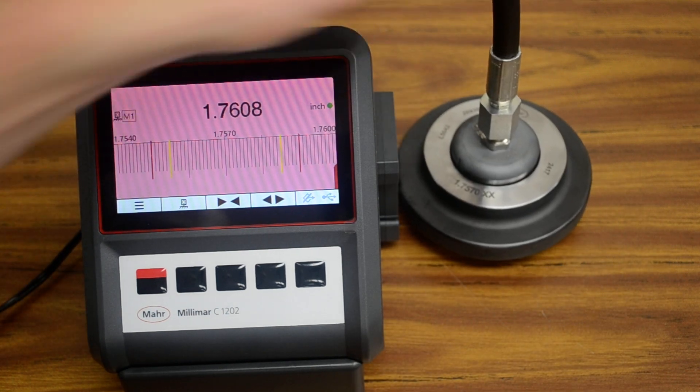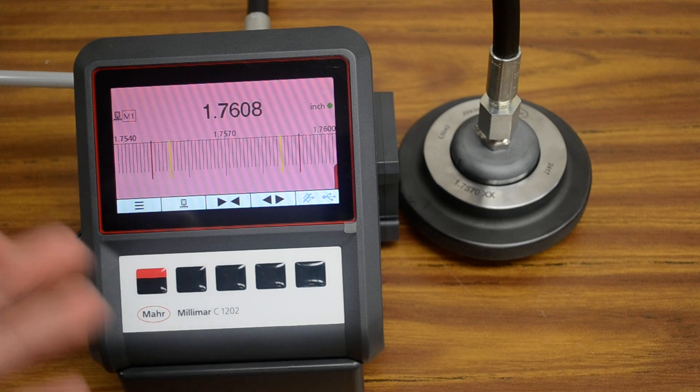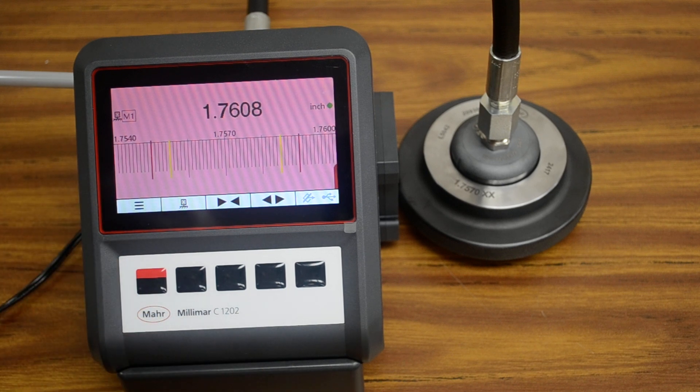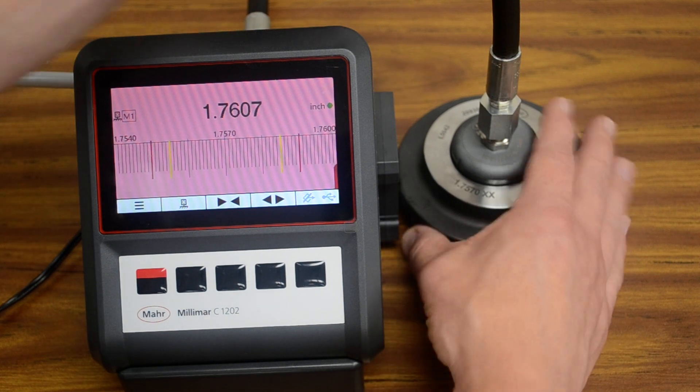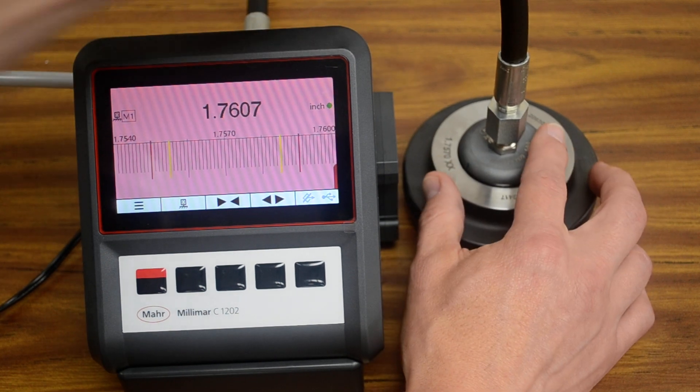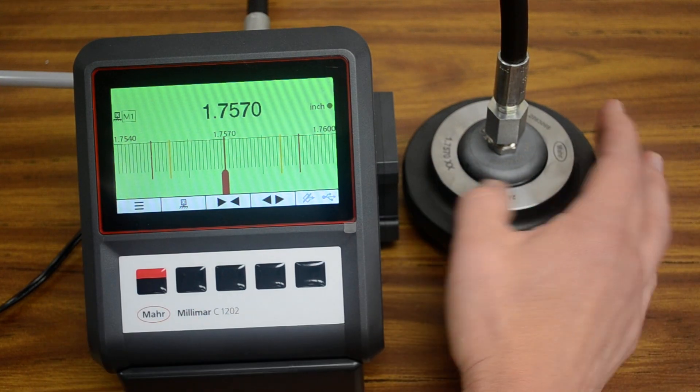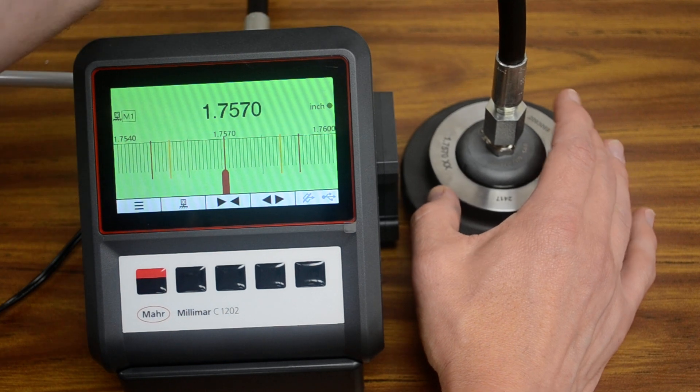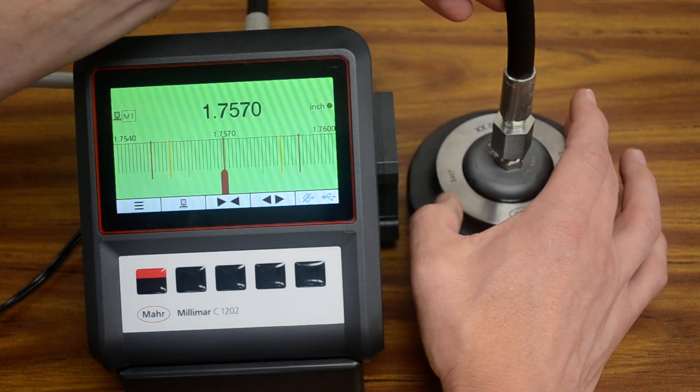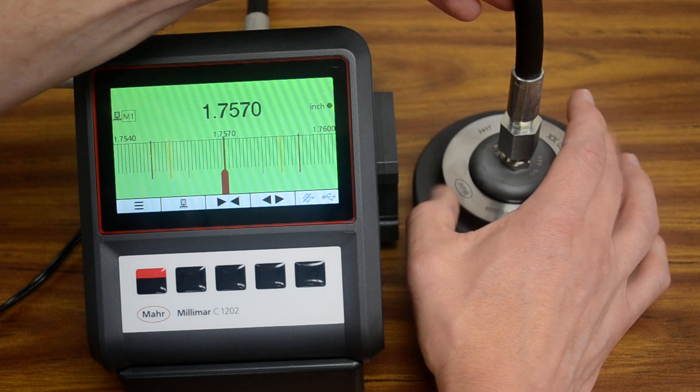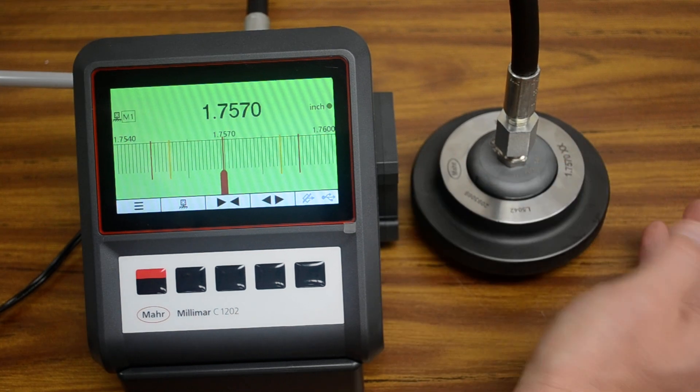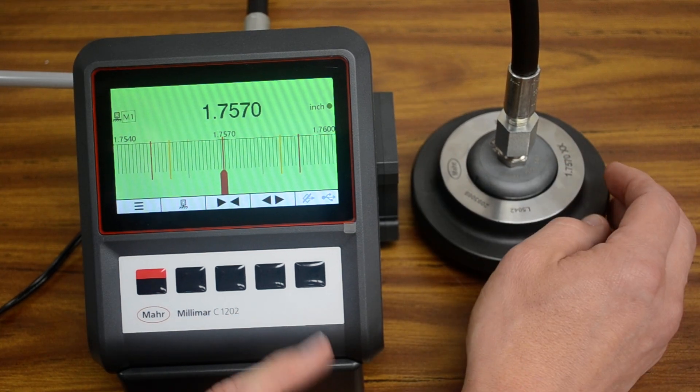Now, when you put that plug in there, you have to tell the amplifier that you're in your master, and this is the master size. So what we need to do is we need to press our datum button. That brings it back to the center, and we're not going to be able to detect a whole lot of variation here in the master because it is made to a very, very tight tolerance.